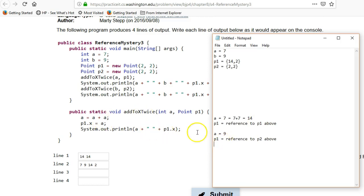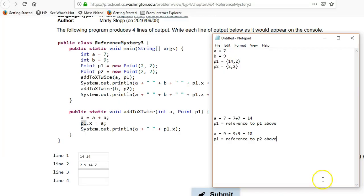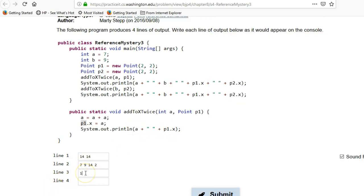So now what happens when we call this? So a equals a plus a, so now a equals 18. And then p1.x, that p1 is not going to look at the caller's p1, but rather it's going to look at the reference to p2. So it's actually going to affect this p1.x, which is now p2.x, equals 18. So now when it prints this out, it's going to be a, which is 18, and p1.x, which is 18.